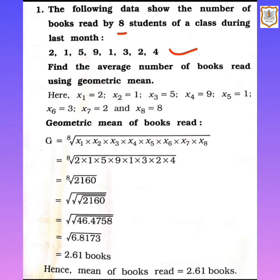Let the observations be x1 = 2, x2 = 1, x3 = 5, x4 = 9, and so on. These are the observations considered as x1, x2, x3, up to x8. Now using the formula of geometric mean, which is nth root of the observations — since there are 8 observations, we take the 8th root of x1 × x2 × x3 × x4 up to x8.